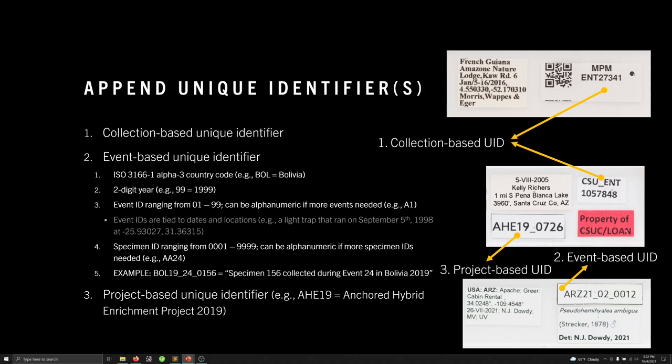The last component is a specimen ID, which can range from 1 to 9,999 — a four-digit number. You can make this alphanumeric if you have more than 10,000 specimens for a given event. So for example, ARZ21020012 can be interpreted as the 12th specimen to get a label. That number doesn't necessarily indicate the order in which it was collected, just the order in which a unique identifier was added. It comes from the second collecting event from Arizona in 2021.